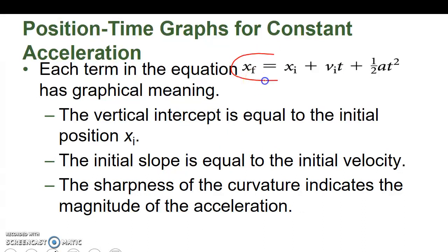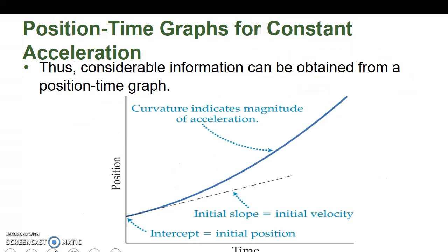When we look at this equation, each term has a graphical meaning. The initial position is the vertical intercept. The slope of the initial part of the curve is equal to the initial velocity because time will be one. The sharpness of the curve indicates the magnitude of the acceleration. This leads us to that curved parabola shape. Initial position is the intercept, the initial slope is based off the initial velocity, and curvature is based off the acceleration. The more acceleration, the greater the curve.